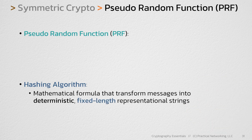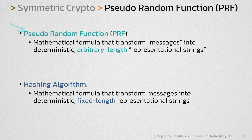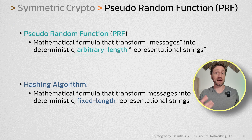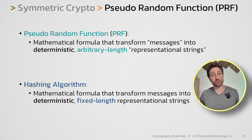We define a hashing algorithm as a mathematical formula that transforms messages into deterministic fixed-length representational strings. A pseudo-random function is similar, except the output is arbitrary length — meaning whatever length you want it to be. It's the same as a hashing algorithm in the sense that if you feed the same things in, you're going to end up with the same output. But with the PRF, you get to choose how long that output will be.